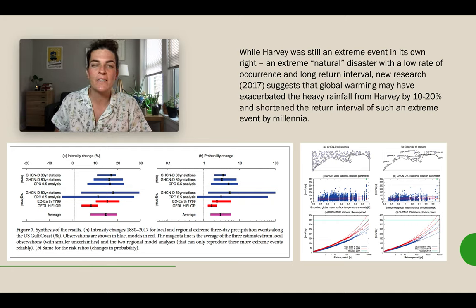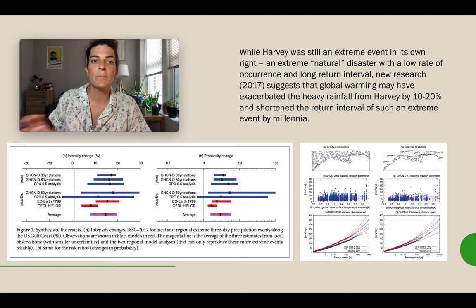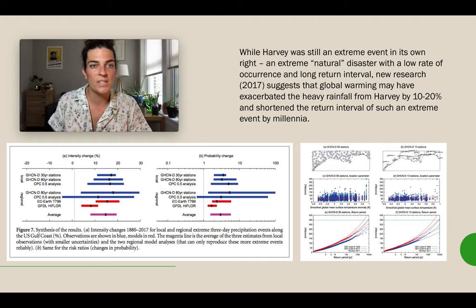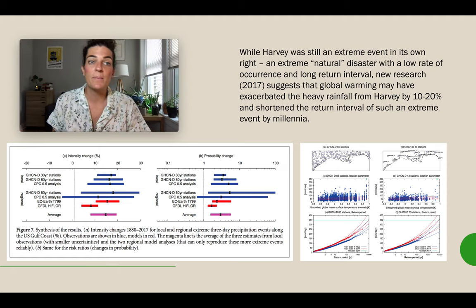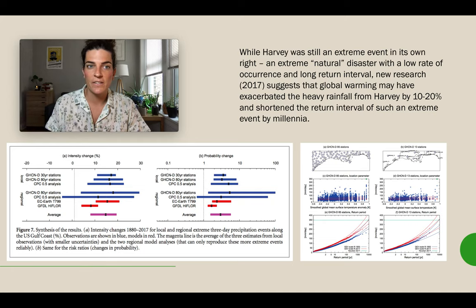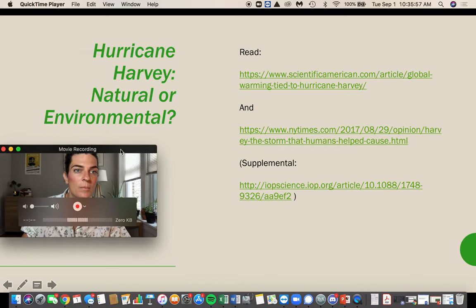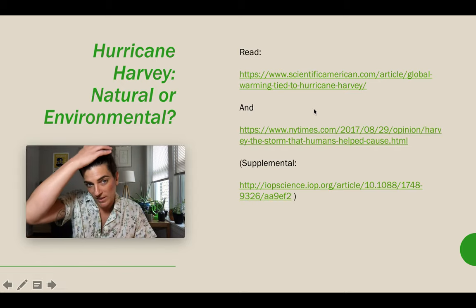This led a lot of people to think: did climate change make Hurricane Harvey even worse? Climate change definitely made Hurricane Harvey rain more over Houston. The estimates are that global warming may have exacerbated or increased the heavy rainfall from Hurricane Harvey by up to 20% — 20% more rain fell because of global warming than would have otherwise. It also shortened the return interval of such an extreme event by millennia. We would expect this extreme event to happen every couple thousand years, but climate change has made it more likely to happen every hundred or even fewer years. So while you might consider a hurricane a natural disaster, Hurricane Harvey and many others wouldn't be nearly as destructive without climate change — making them, in my view, environmental disasters.